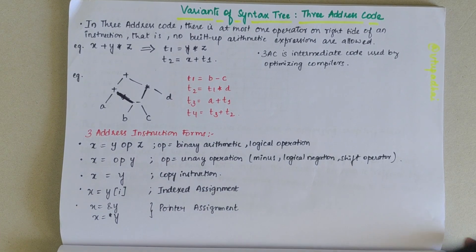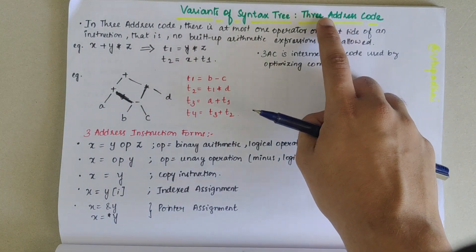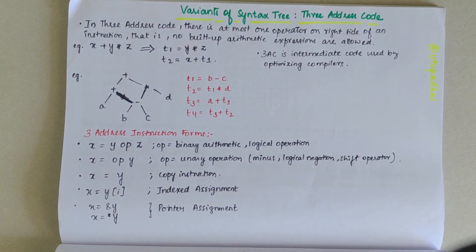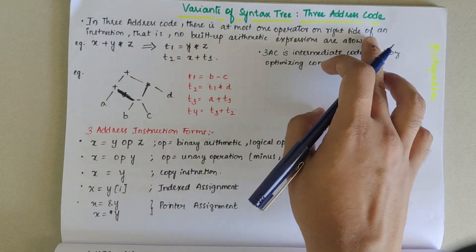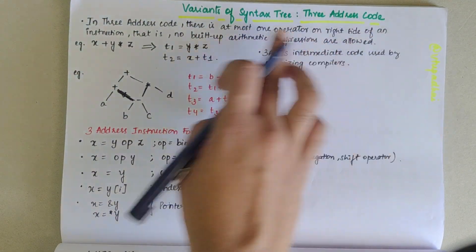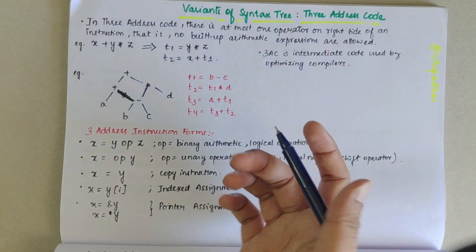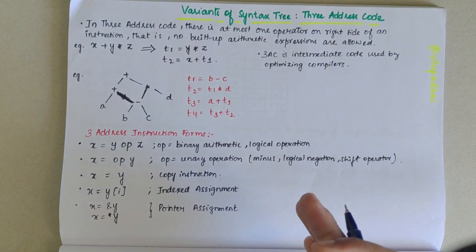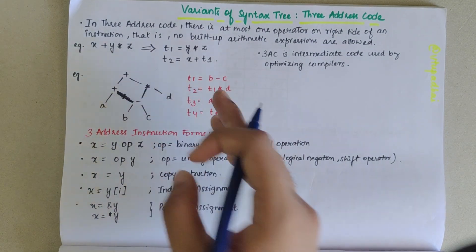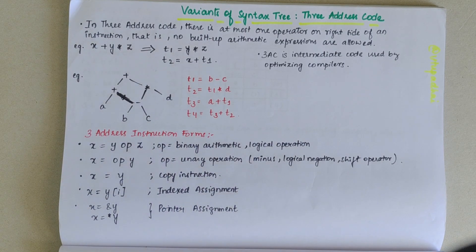In this video, we'll be looking into the variants of syntax tree. We'll particularly deal with the three address code. In three address code, there is at most one operator on the right-hand side of our instruction — that is, no built-up arithmetic expressions are allowed. There has to be only one operator on the right-hand side for a particular instruction to be a valid three address instruction.